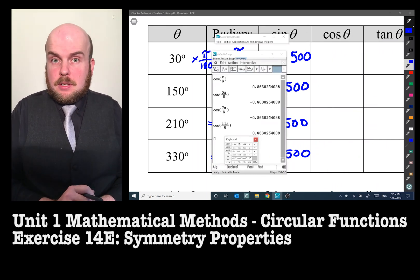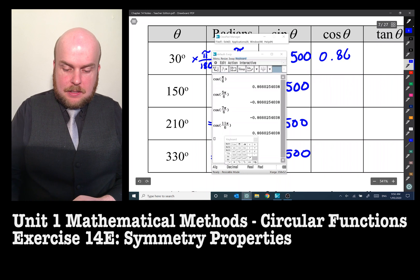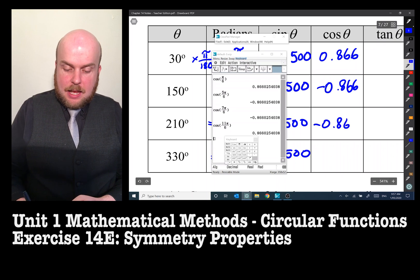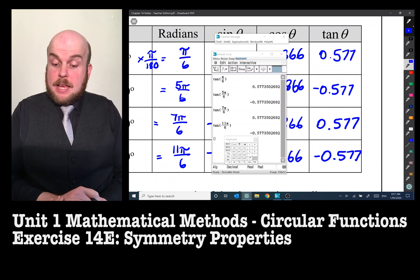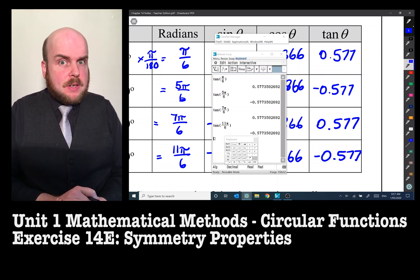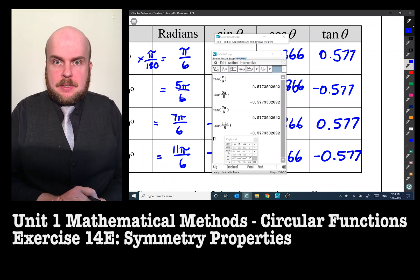And now I've done the cos equivalent of each of these. I get 0.866, -0.866, -0.866, and positive 0.866.